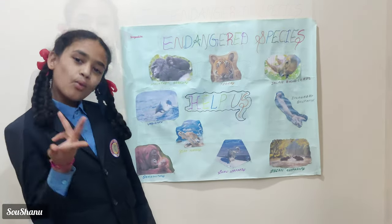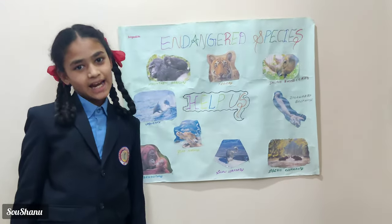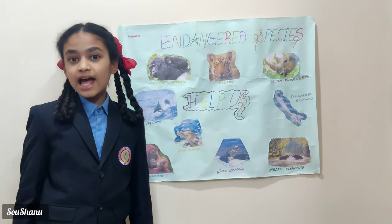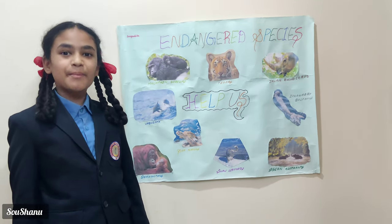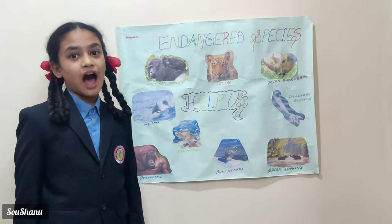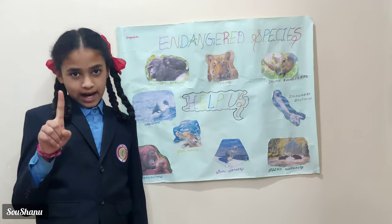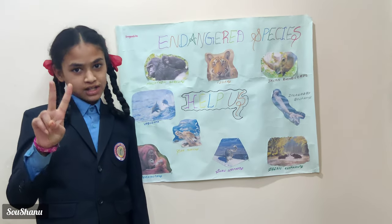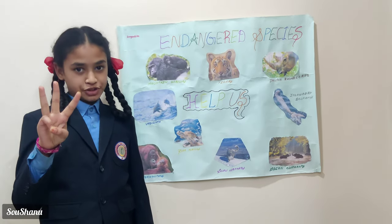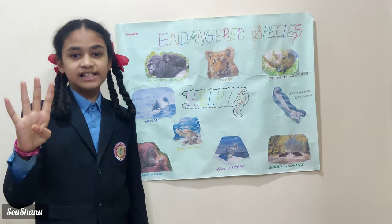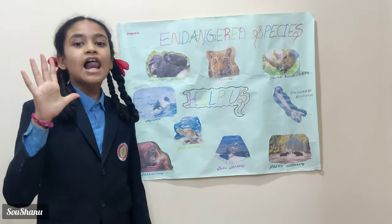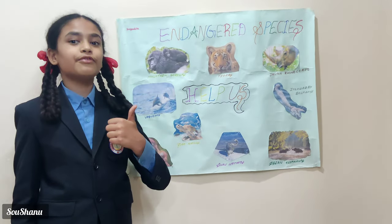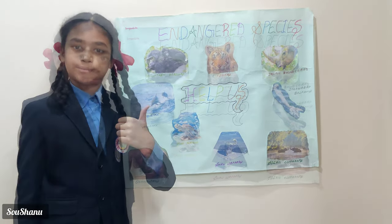Why do you think animals became endangered? Reasons why animals became endangered are overhunting, habitat loss, pollution, diseases, low birth rate, and human-wildlife conflict.